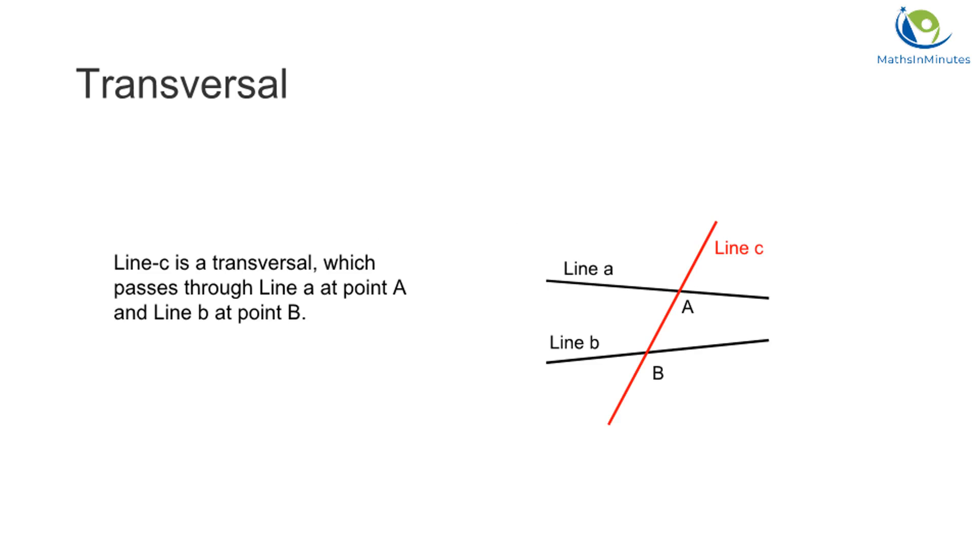For example, line C is a transversal, passing through line A at point A and line B at point B, respectively.